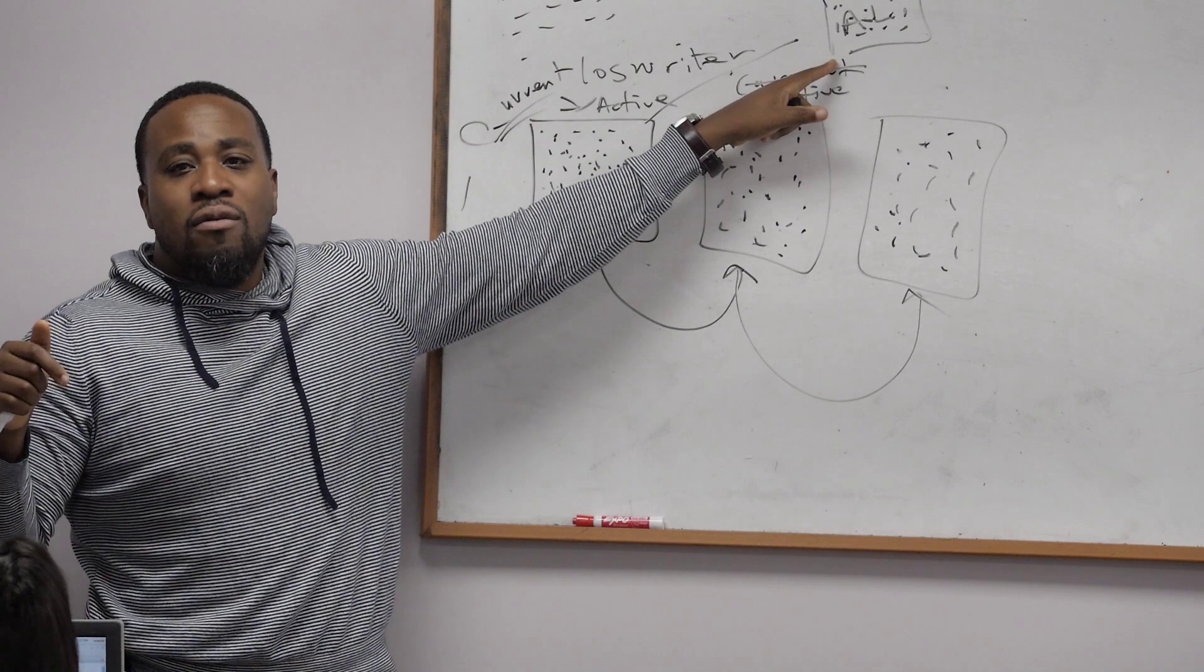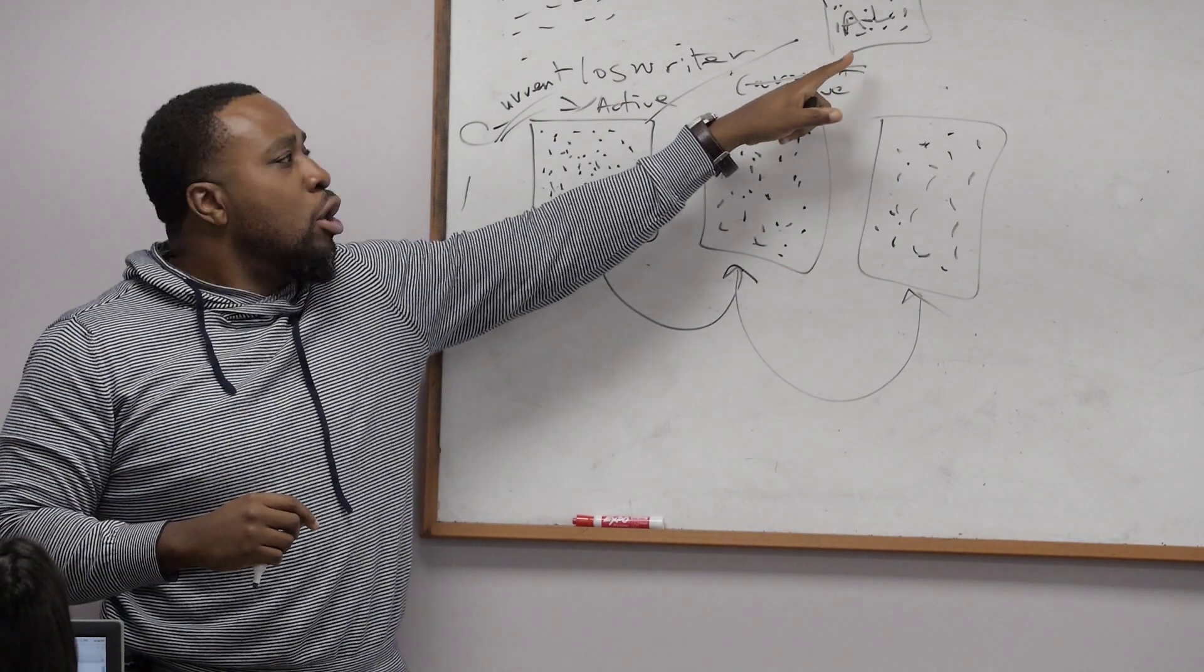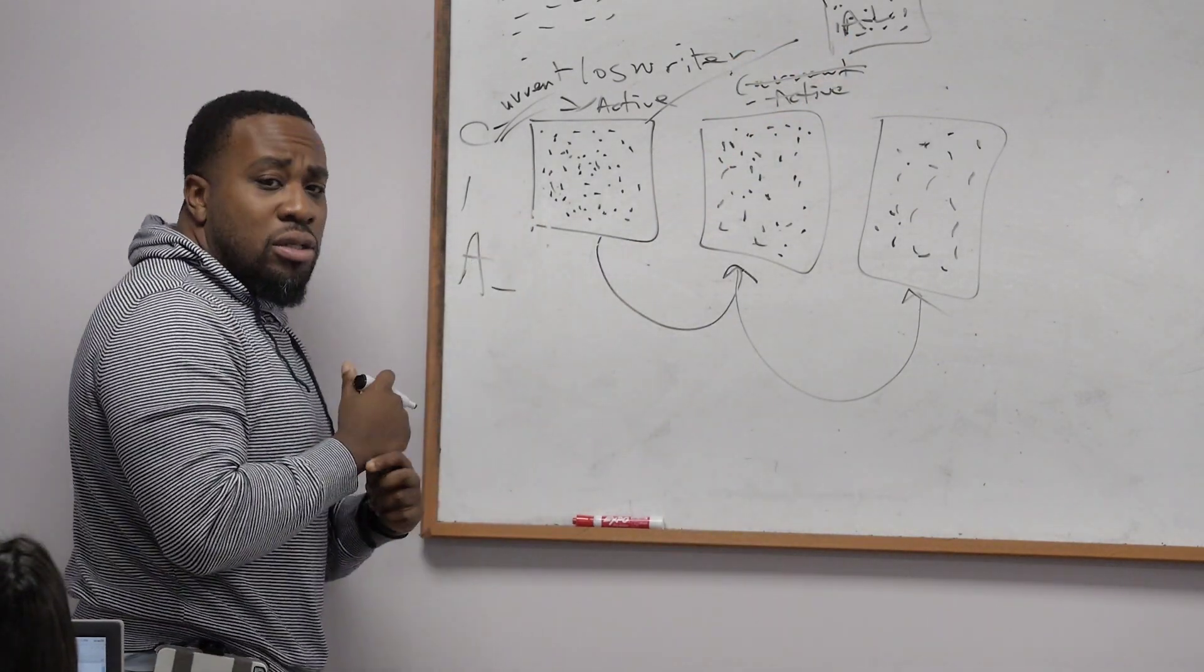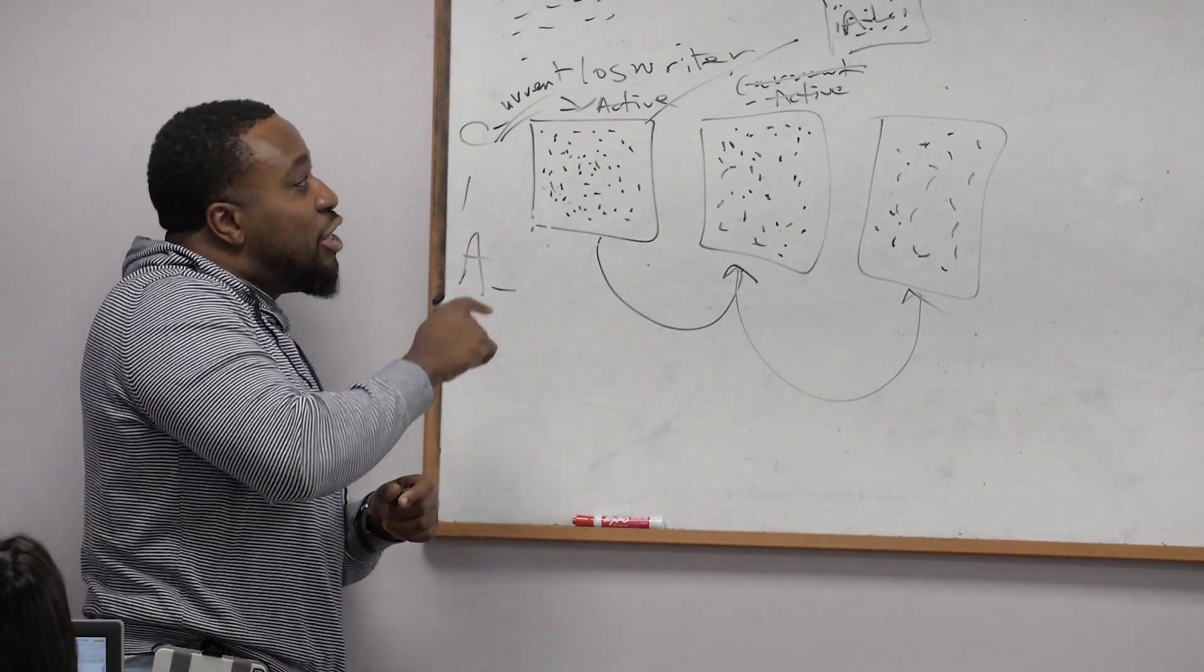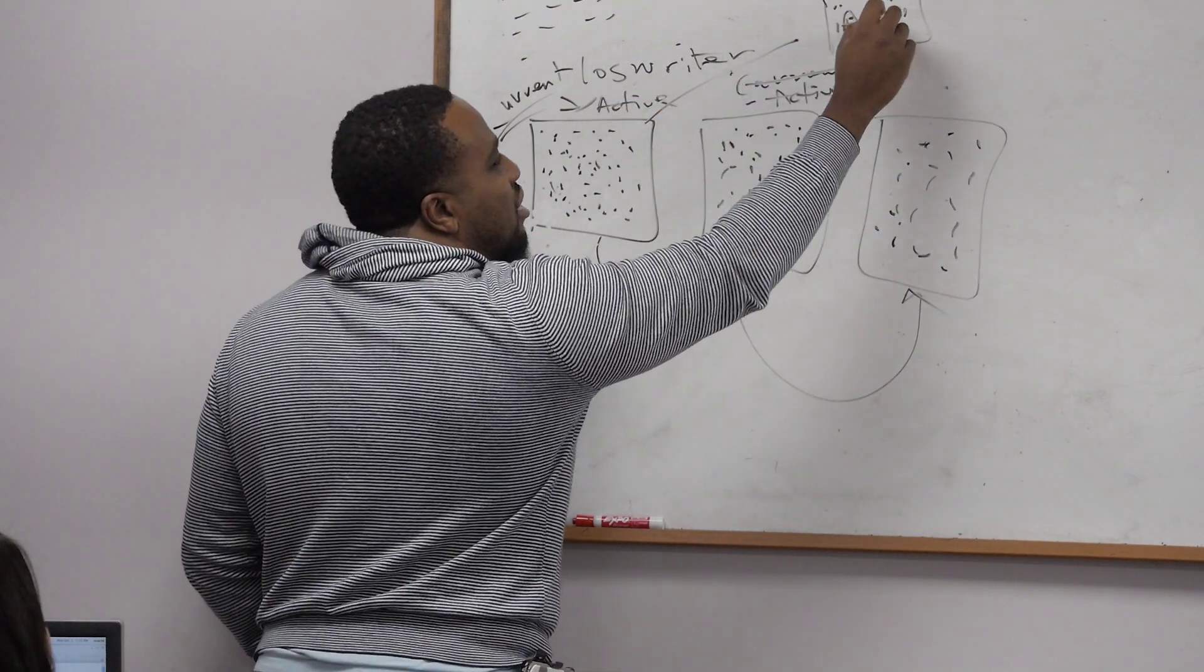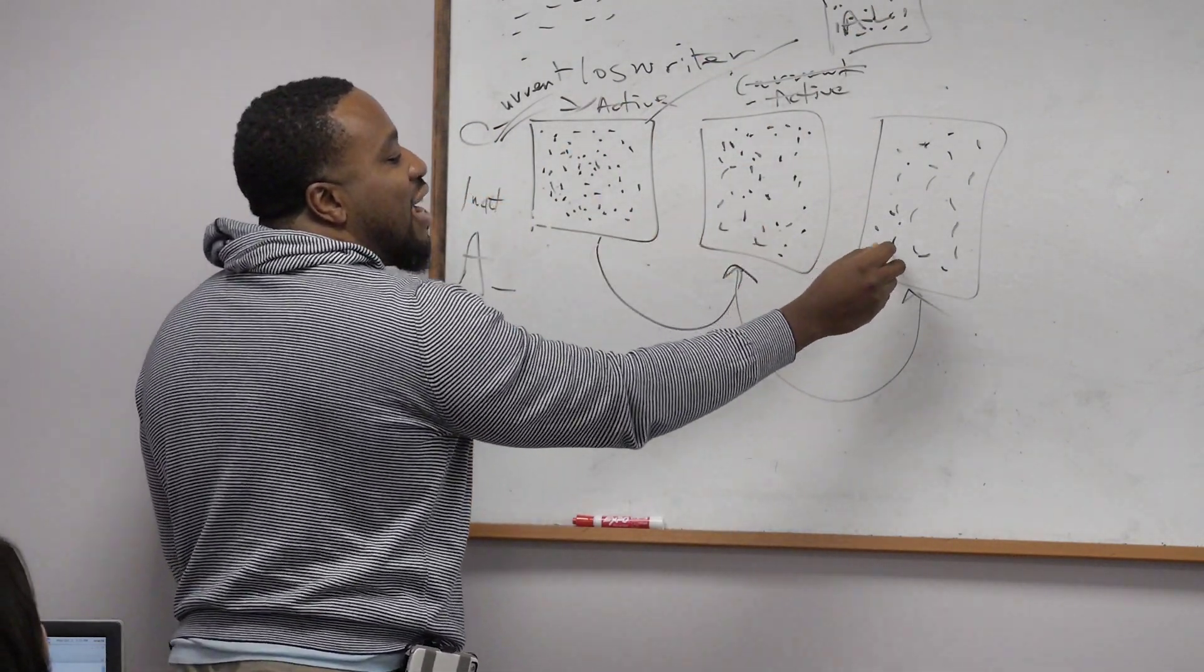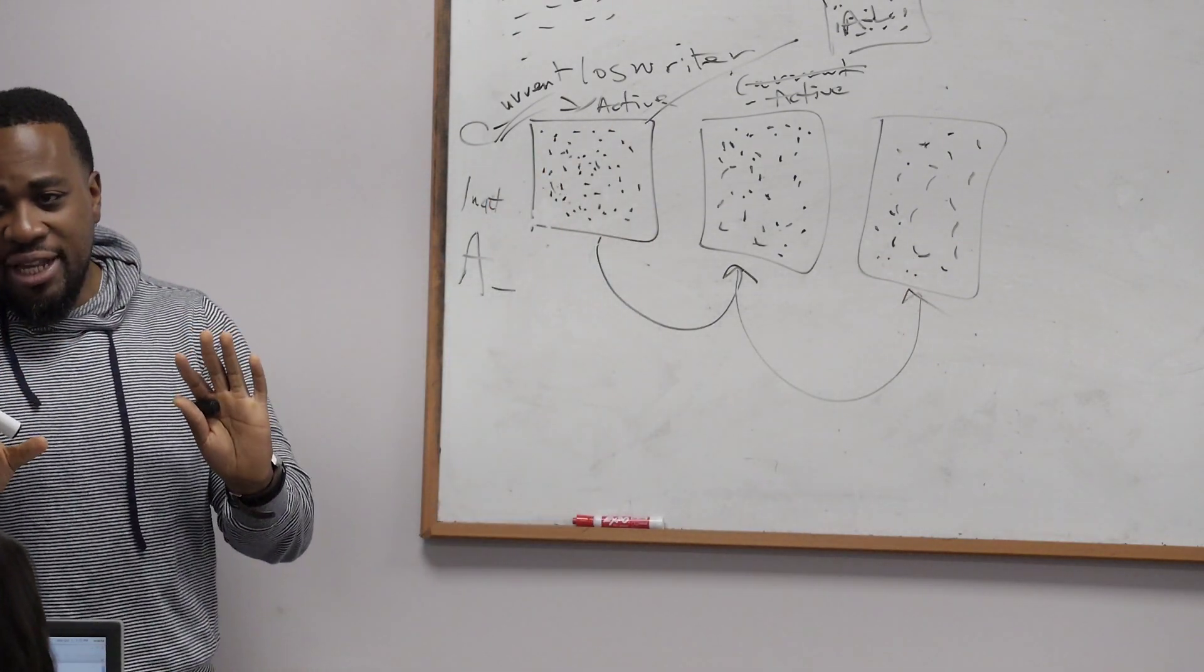You understand what I'm saying? John, remember that time. So now watch this. Being that your database is in archive log mode, it's going to send all copies. Once this guy has finished writing, now it becomes what? Inactive. Now once this guy is full, he can overwrite everything here and start the whole process all over again. Does everybody understand?